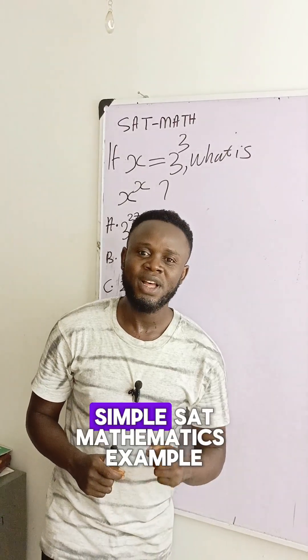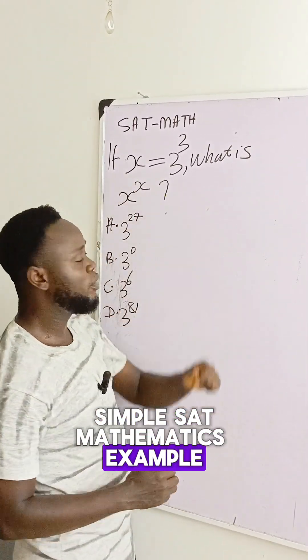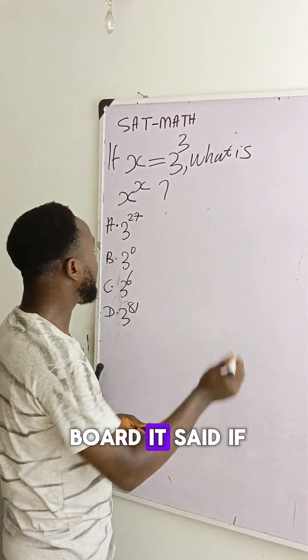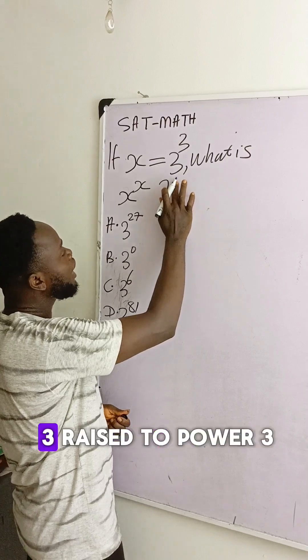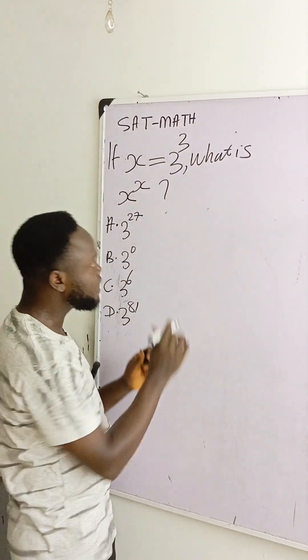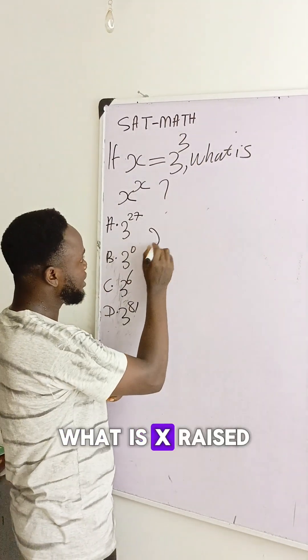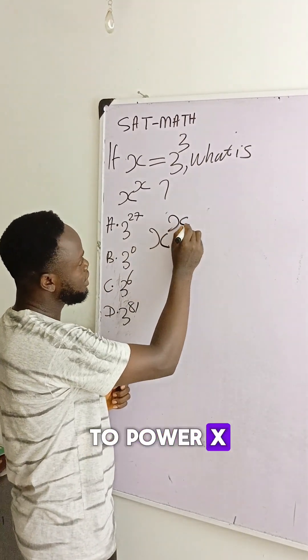Let's break down this simple SAT mathematics exam question we have on the board. It says if x is equal to 3 raised to the power 3, what is x raised to the power x?